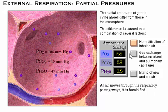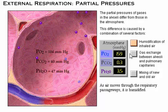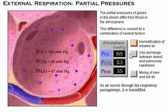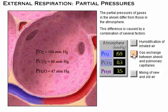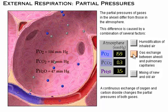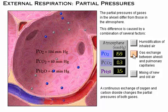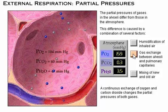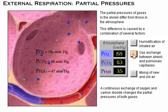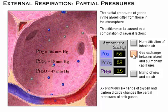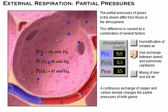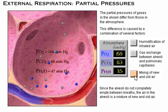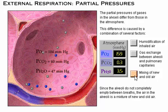As air travels through the respiratory passageways to the alveoli, it is humidified, picking up water molecules. This greatly increases the partial pressure of water. A continuous exchange of oxygen and carbon dioxide occurs between the alveoli and pulmonary capillaries, changing the partial pressures of both gases. Oxygen diffuses out of the alveoli into the pulmonary capillaries, and carbon dioxide diffuses from the pulmonary capillaries into the alveoli. Since the alveoli do not completely empty between breaths, the air in the alveoli is a mixture of new air and air remaining from previous breaths.